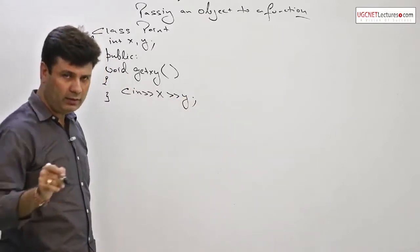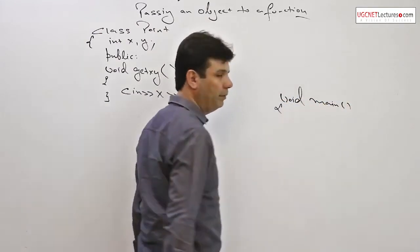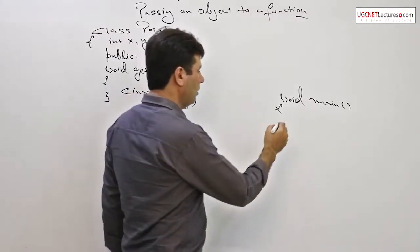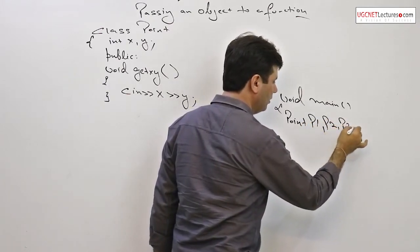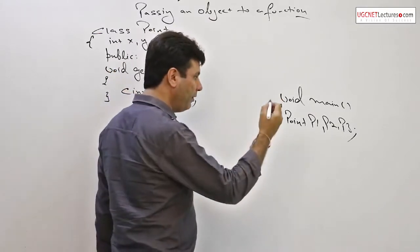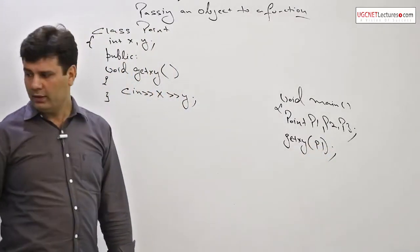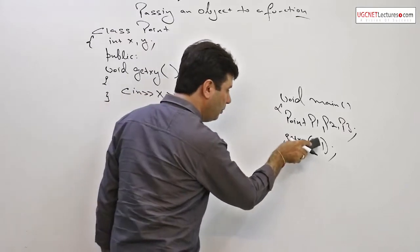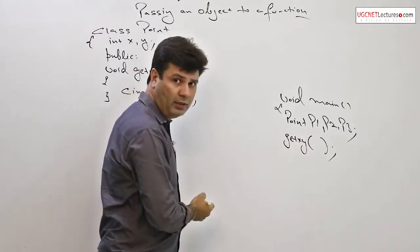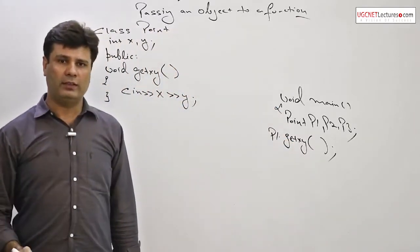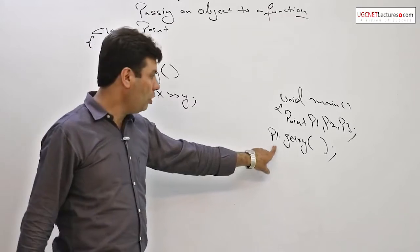From the main function again I will create three objects of a class. Previously I was calling get xy and I was passing p1 as an argument, but now in case of classes no object reference is required as an argument to be passed to a function. Instead it is a member function and member function always requires an object reference. So I will call this get xy function by its object reference p1 dot get xy.